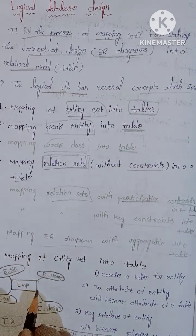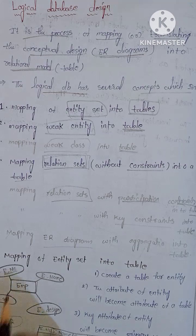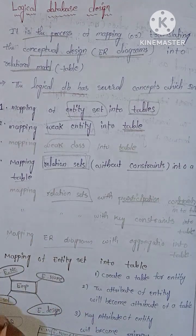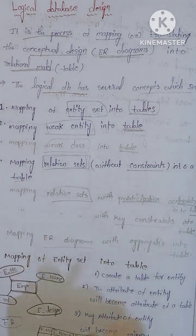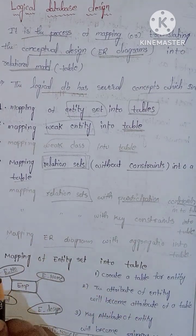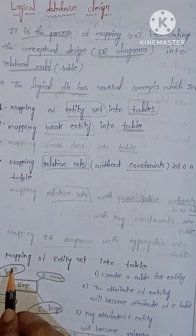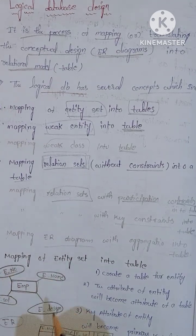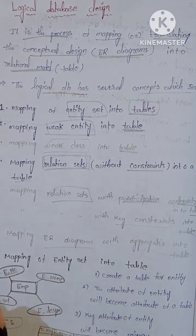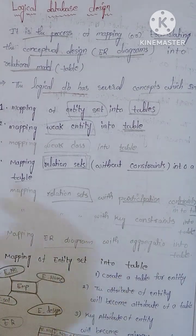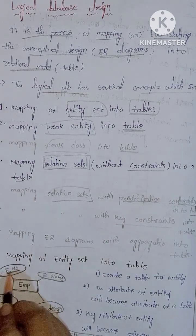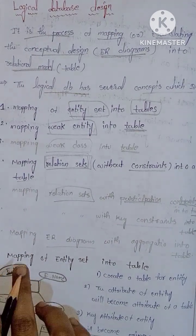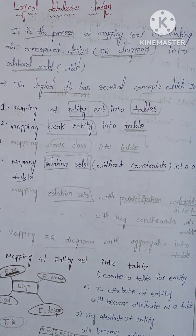Here we have an employee entity represented by a rectangle in the ER diagram. The attributes are employee number, employee name, employee designation, and employee salary. The primary key is employee number, which is shown with an underline.